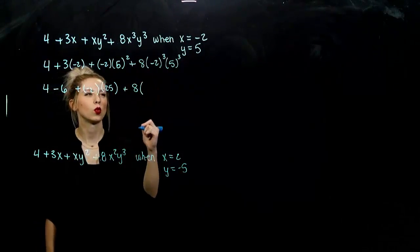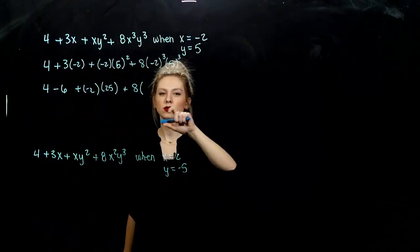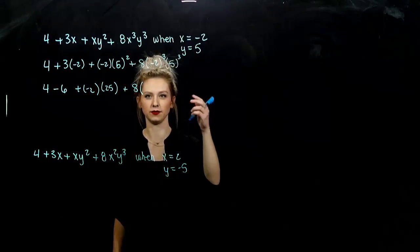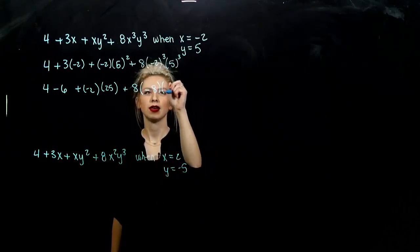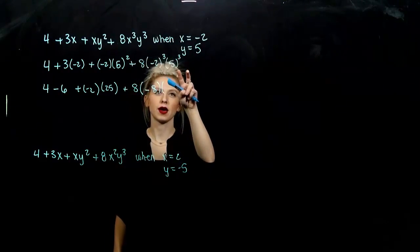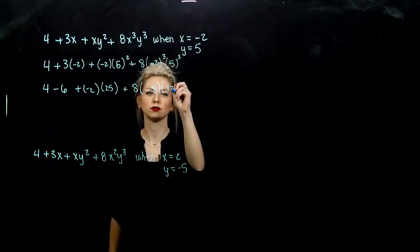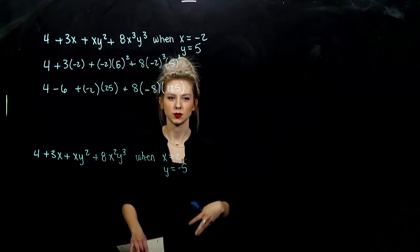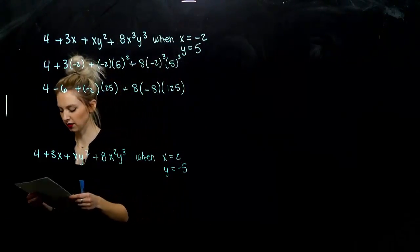And what am I adding on to that? 8 times what value? Negative 2 times negative 2 times negative 2 gives me negative 8. And 5 times 5 is 25, times another is 125.